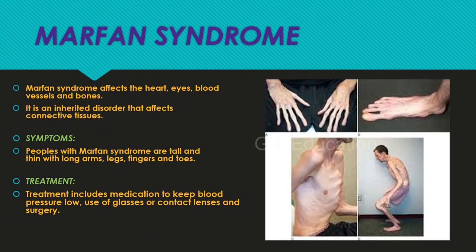Marfan syndrome affects the heart, eyes, blood vessels, and bones. It is an inherited disorder that affects connective tissues. Symptoms include being tall and thin with long arms, legs, fingers, and toes. Treatment includes medication to keep blood pressure low, use of glasses or contact lenses, and surgery.